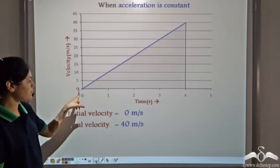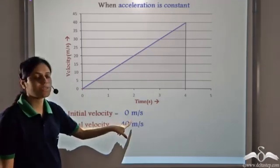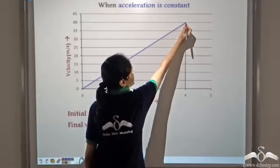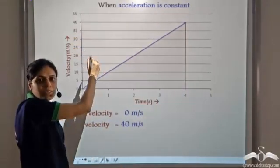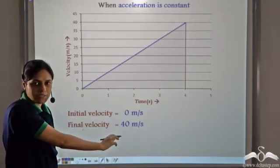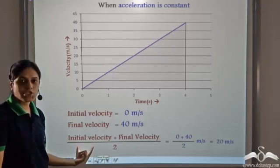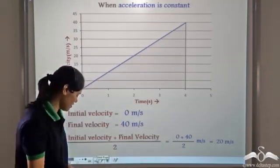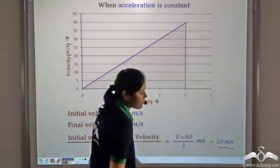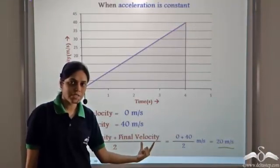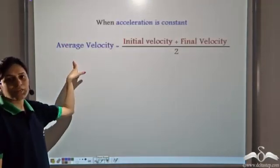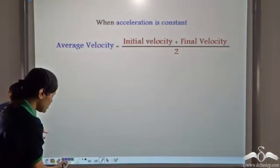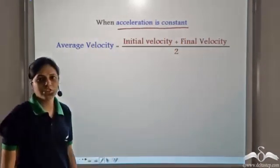The initial velocity for this graph is zero metres per second. The final velocity at four seconds is forty metres per second. We see that initial velocity plus final velocity by two — that is zero plus forty by two — gives us twenty metres per second, which matches our average velocity. So average velocity equals initial velocity plus final velocity divided by two, when acceleration is constant. This formula holds only when acceleration is constant.